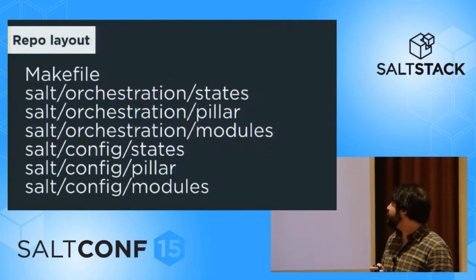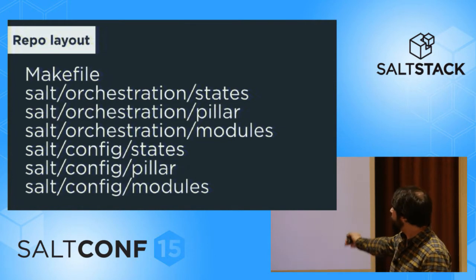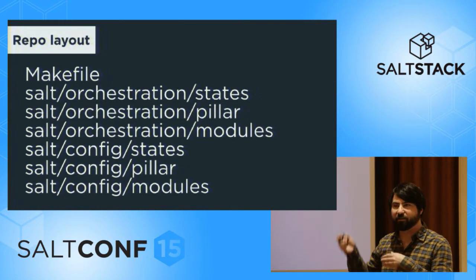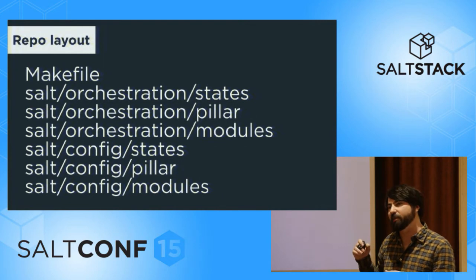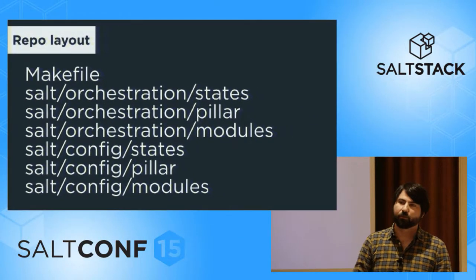So this is the basic way that we're doing things. Inside each service's repository, we have a salt directory. Inside that, we have directories for orchestration and configuration management. Inside both of these, we have states, pillars, and modules. So a service team can add their own custom modules, their own custom states, and use pillars. And all of it is controlled via a makefile that is run via Jenkins.